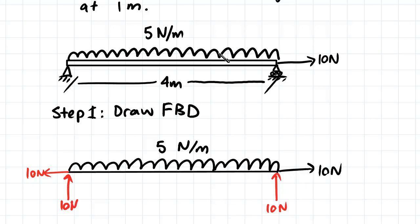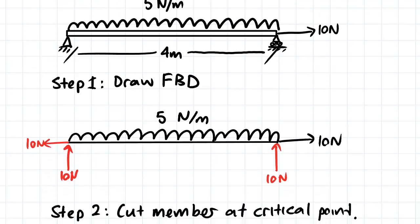So we have 5 newton per meter force which acts over 4 meters, so that's a total of 20 newtons if we were to convert this into a point load. And since that would act halfway down this beam, half of the load will go into the left side and half of the load will go into the right side, just by symmetry. So that's where our tens come from. Moving on from that point, our next step...